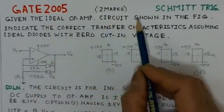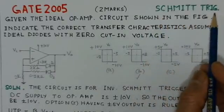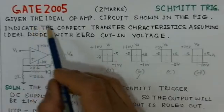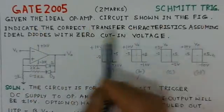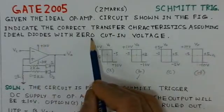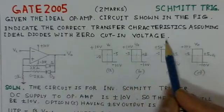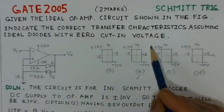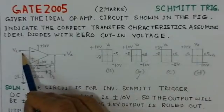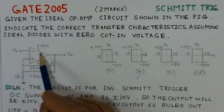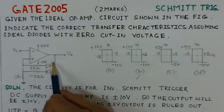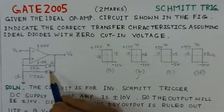This problem is of two marks and is based on the Schmitt trigger. Given the ideal op-amp circuit shown in the figure, we must indicate the correct transfer characteristics, assuming an ideal diode with zero cut-in voltage. The circuit given is an inverting Schmitt trigger, and in this circuit we observe there is a diode and a resistive network connected in the feedback path.